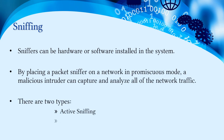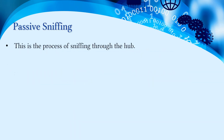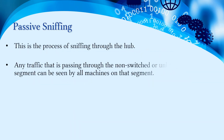By placing a packet sniffer on a network in promiscuous mode, a malicious intruder can capture and analyze all of the network traffic. There are two types of sniffing: active sniffing and passive sniffing.